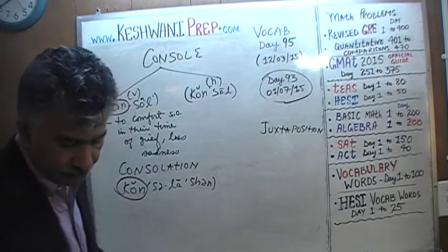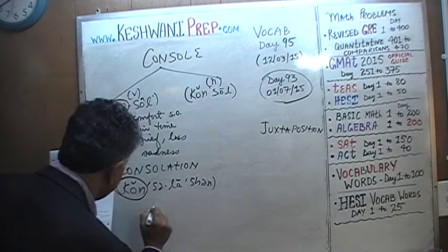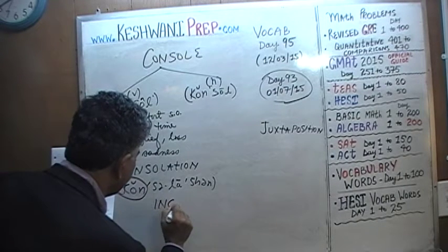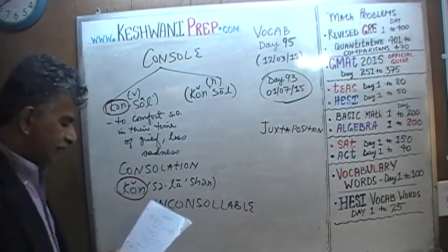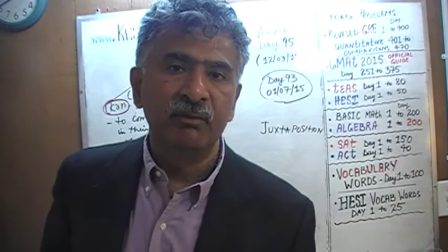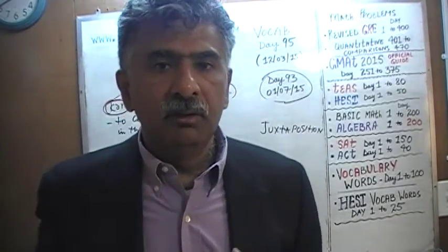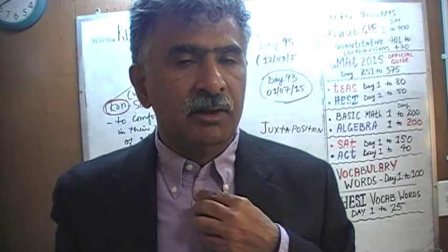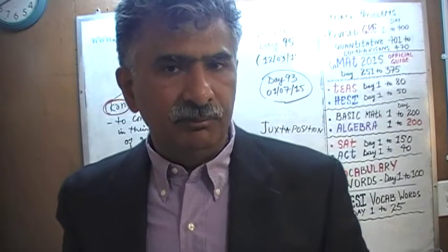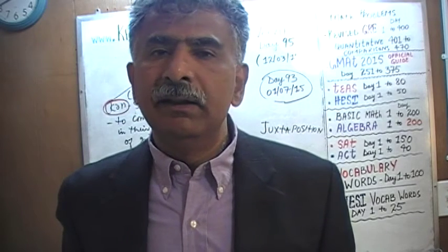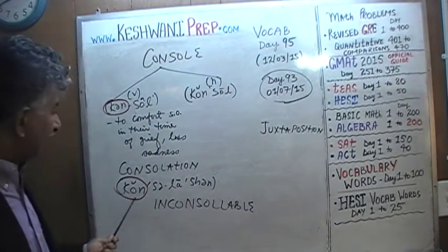What's the antonym? The antonym is somebody who cannot be consoled. Somebody who cannot be consoled is said to be inconsolable. Inconsolable means that person is suffering with so much grief, so much sadness, so much loss, that there is no way you can make them feel better or comfort them. They are inconsolable. Consolable means you can console them; if you cannot achieve that, you say he was inconsolable.